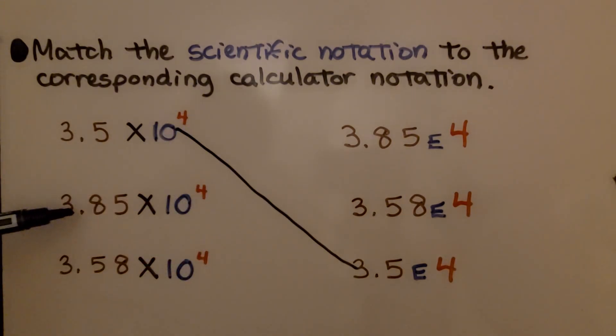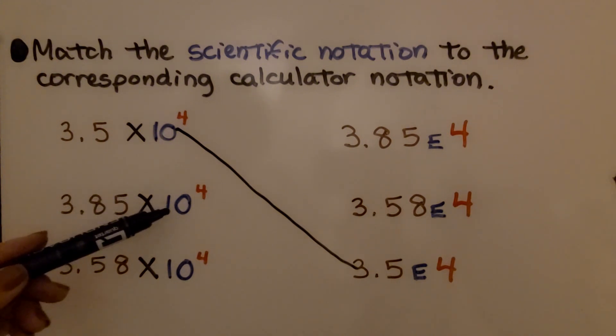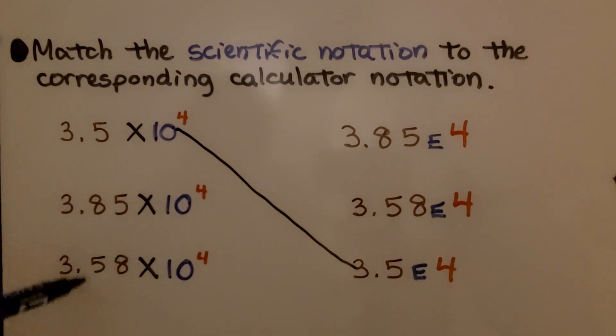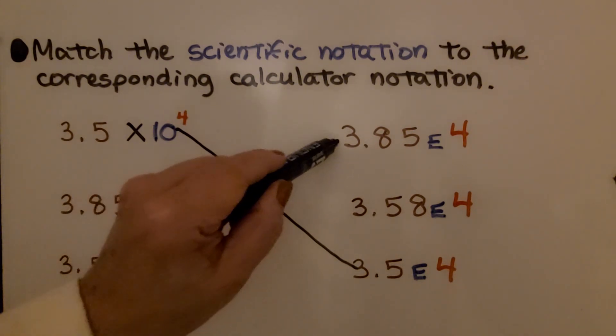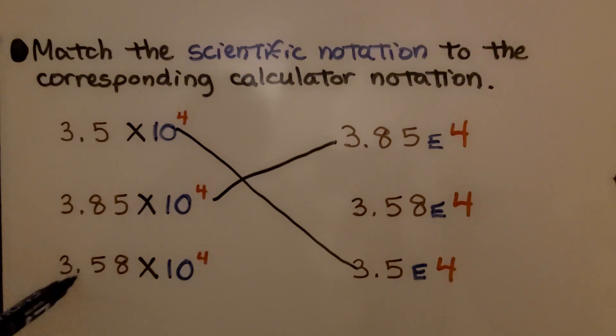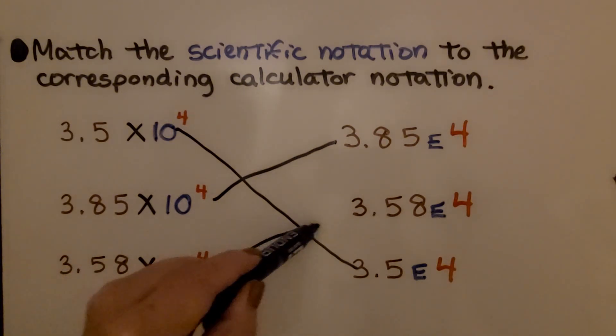Here we have 3.85 times 10 raised to the 4th power. Be careful. See how the numbers are inverted? We want 3.85. That's going to be this one, which means 3.58 times 10 to the 4th power would be this one.